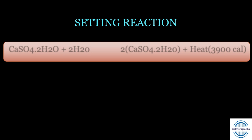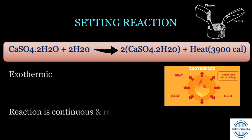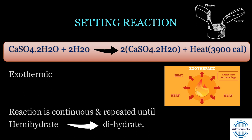The setting reaction: when calcium sulfate hemihydrate is mixed with water, it takes up one and a half molecules of water — regaining the water of crystallization — and becomes calcium sulfate dihydrate. Heat is liberated, approximately 3900 calories, making the reaction exothermic. The reaction is continuous and repeated until all the hemihydrate is converted into dihydrate.